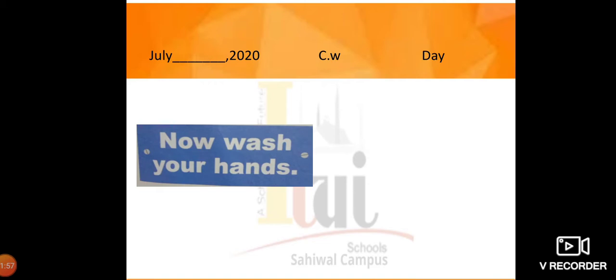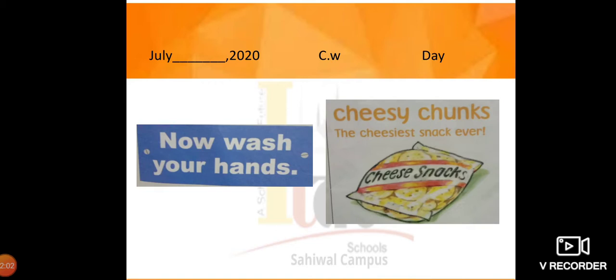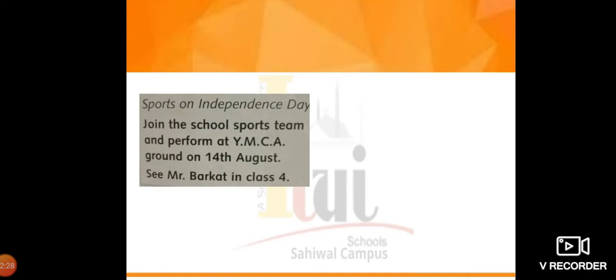The next one says 'Wash your hands.' Where do you think it might be written? It might be written on the toilet door or toilet wall. And the next one is 'Cheesy Chunks' — that is a snack, so it might be written in the canteen or cafeteria, perhaps on the wall or door. So 'Wash your hands' is from the toilet and 'Cheesy Chunks' is from the canteen.